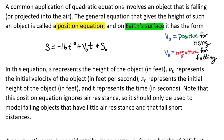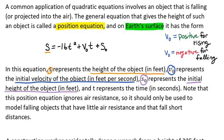In this equation, s represents the height of the object in feet. Our v sub o represents the initial velocity of the object in feet per second, and our s naught represents the initial height of the object in feet. And t represents the time in seconds.